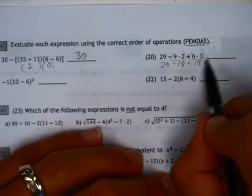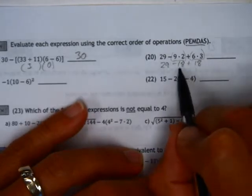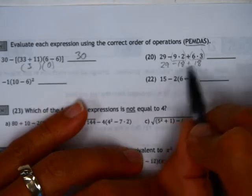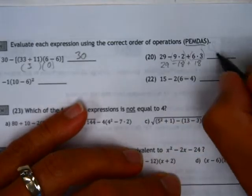So when you do that, a lot of big numbers become much smaller. Negative 18 plus 18 is equal to 0, so the answer is 29.